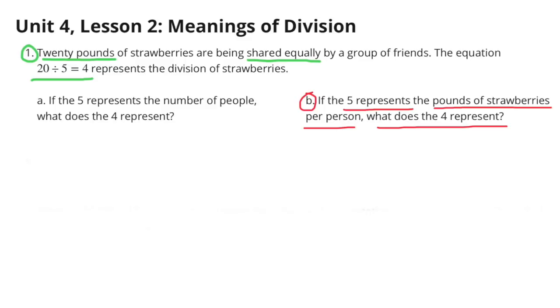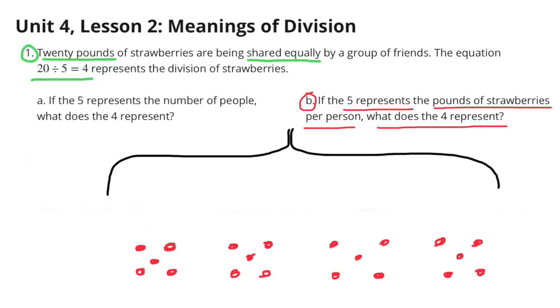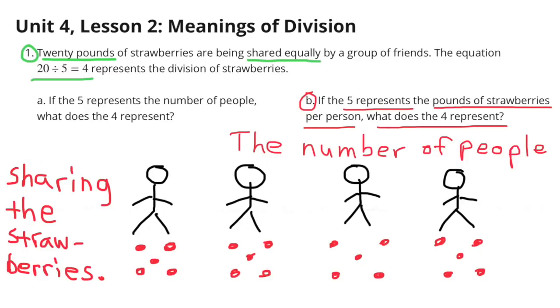B. If the 5 represents the pounds of strawberries per person, what does the 4 represent? Here you see 5 pounds of strawberries in 4 different groups. If the 5 represents the pounds of strawberries, then the 4 represents the number of people in the group that are sharing the strawberries.